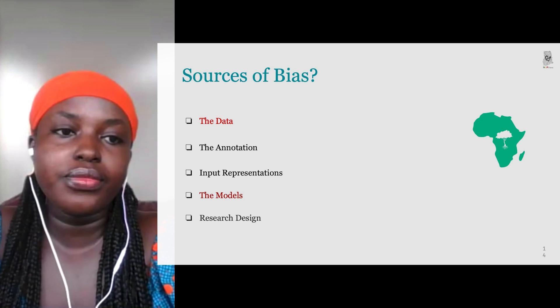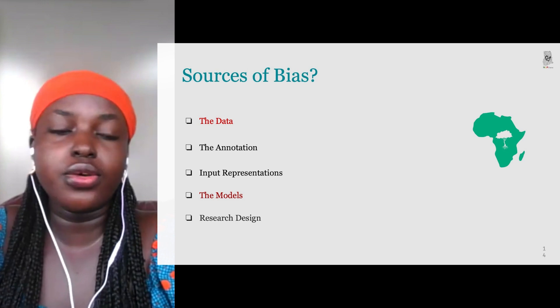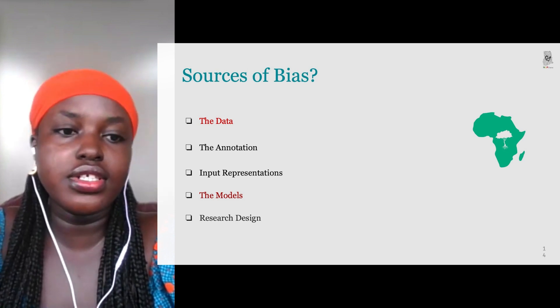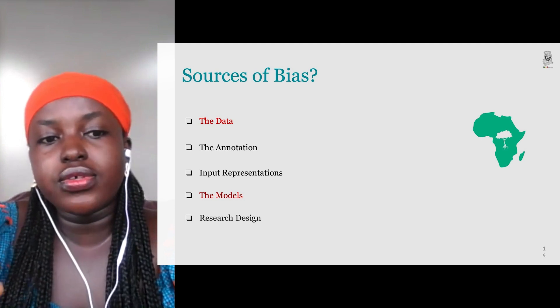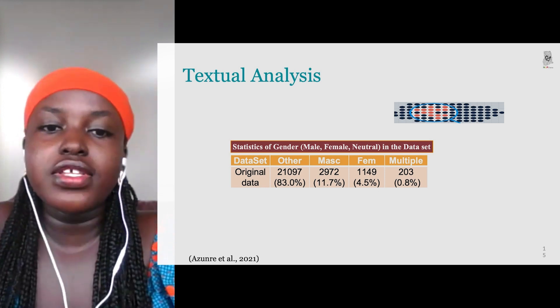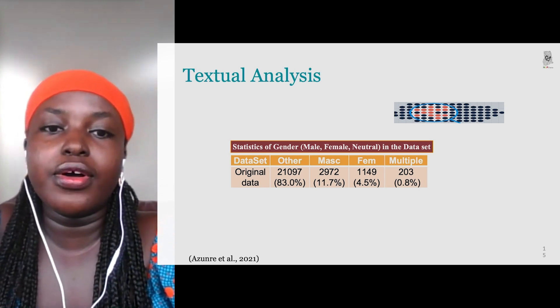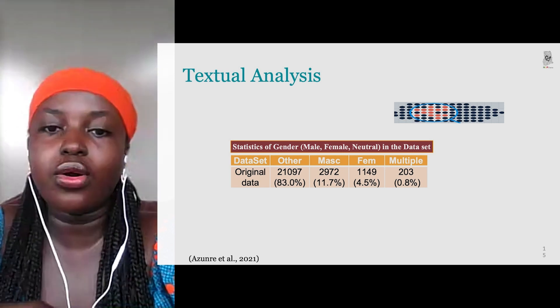I started thinking about what could be causing the problem. From my literature review, I found that bias can come from the data, the annotation, the input representation, the models, and also the research design. I started working on the data and am currently also examining the models used to build the systems.